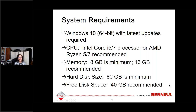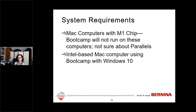System requirements: Windows 10 64-bit with the latest updates is required for version 9. There are differences between minimum and recommended specs — download these requirements from the website, and if getting a new computer, take them with you while shopping. The recommended specs will allow the computer to run version 9 more efficiently. For Mac computers with an M1 chip, Bootcamp will not run on these — you need Parallels, though that hasn't been tested yet. Intel-based Mac computers using Bootcamp with Windows 10 will be fine.